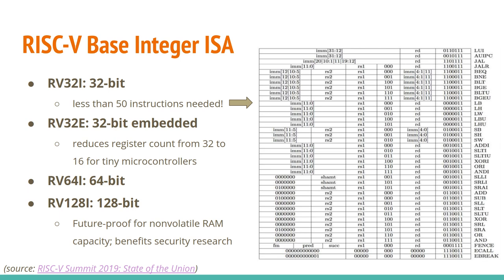There are four base integer instruction sets. The first is RV32I, which is 32-bit and has fewer than 50 instructions — much smaller than x86 or ARMv8. There's also an embedded variant with a smaller number of registers to save on resources. A more common one will be RV64I, which is 64-bit integer. There's even 128-bit, which the designers included because running out of address space is very hard to work around. With non-volatile RAM capacities increasing, we may need that sooner rather than later, and it's also beneficial for security reasons.